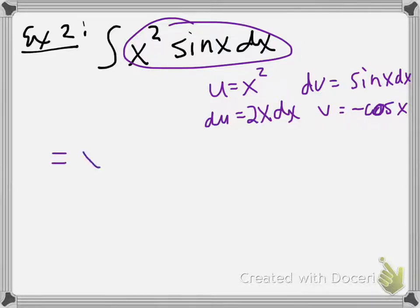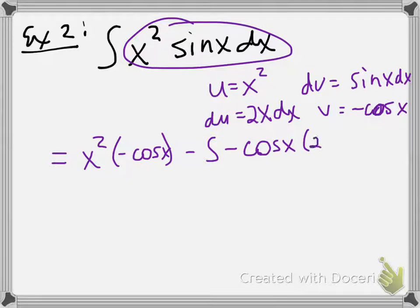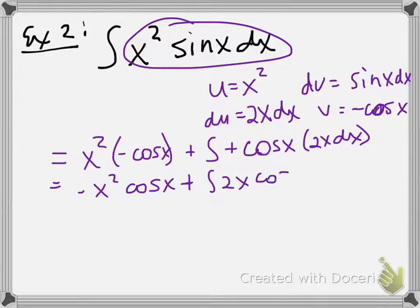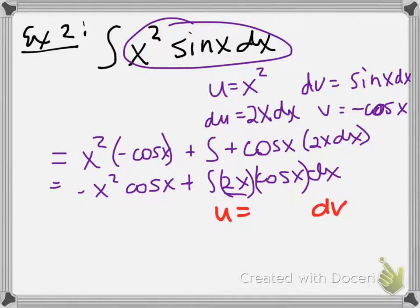I'm going to do u times v minus the integral of v du. If I simplify, I have negative x² cos(x) plus the integral of 2x cos(x) dx. So a lot has been helped because we went from x² to 2x, but notice we still have two functions — 2x and cos(x) — so it's still a product. That means we have to do integration by parts again.